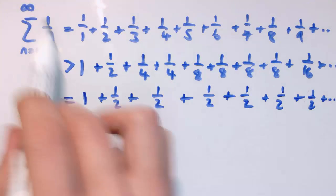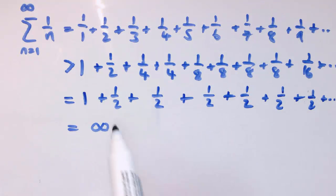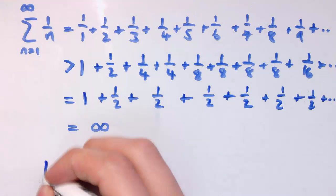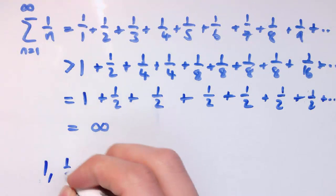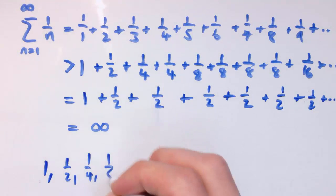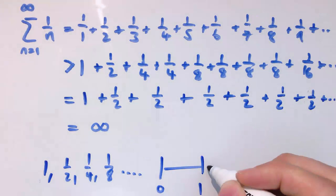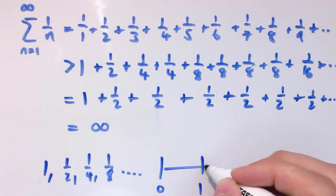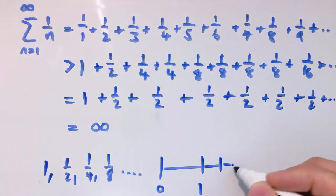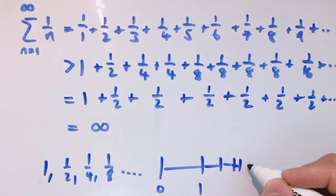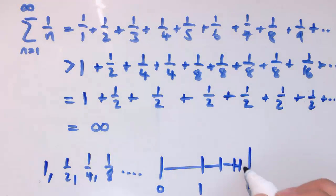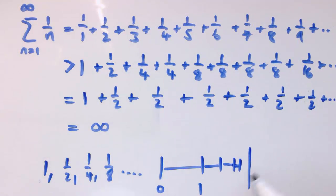So this sequence is bigger than any finite number, so it can't be approaching a limit. It's very different to the sequence 1, one-half, one-quarter, one-eighth, etc., where we said: start at zero, then get to one, then one-and-a-half, then one-and-three-quarters, then one-and-seven-eighths — each time going only half as far as previously toward two, but never quite getting there. So the limit is two.